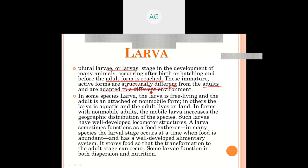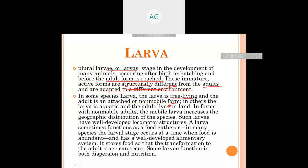Larvae are adapted to a different environment from adults. In some species, larvae are free-living while the adult is non-mobile. We have studied Petromyzon in vertebrates — it is marine, but its larva is fresh water. So the larva can have a different habitat from the adult. In amphibia, the larva is aquatic while adults live on land.